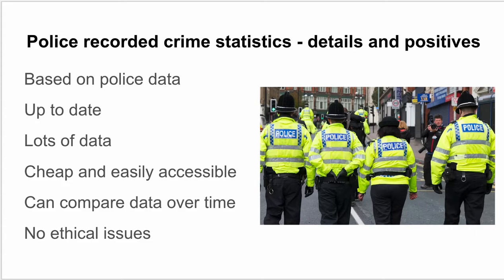Moving on to the first method: police recorded crime statistics. This is the crime that police record based on arrests, criminal convictions, and people being charged — things that the police process. In terms of positives, they're up to date and you can access very recent information. There's lots of data, it's cheap and easily accessible online, you can search by local area, compare data over time to see how crimes have risen or dropped, and there are no ethical issues for a sociologist using these.